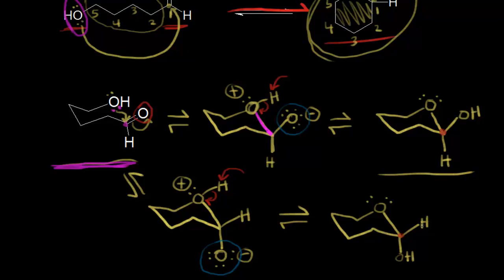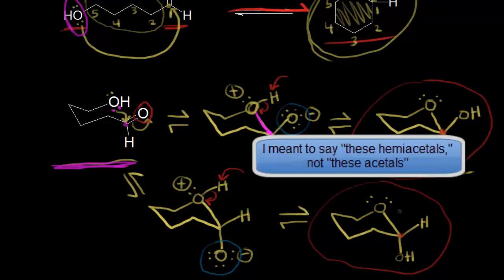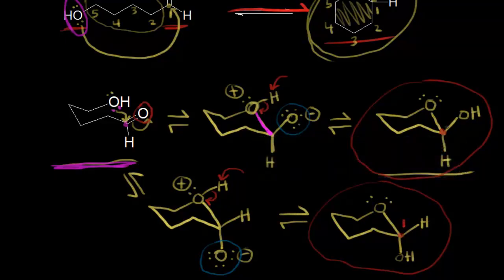This is extremely important in carbohydrate chemistry. These hemiacetals differ at carbon one — the carbon one position is called the anomeric carbon in carbohydrate chemistry. If the OH is up or down, those are different anomers, which is extremely important for something like glucose. We'll definitely cover that in a later video. The formation of cyclic hemiacetals is an extremely important reaction to understand.